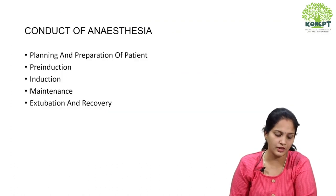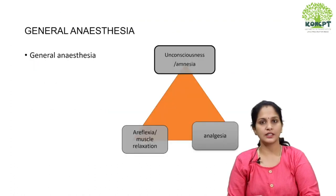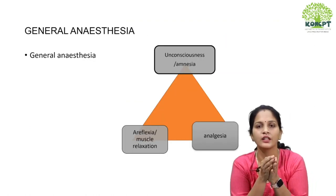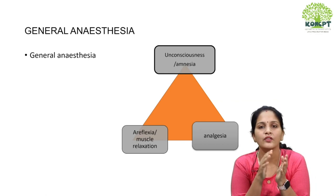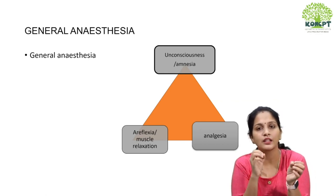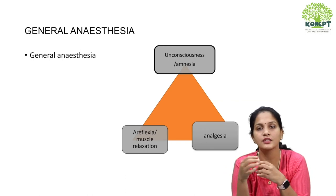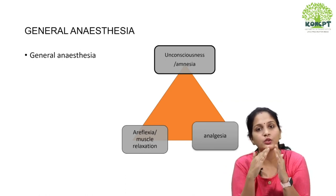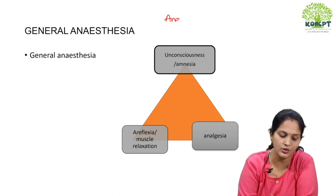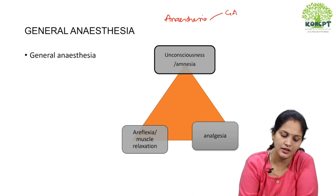So that was the history of anesthesia. Now let us see what anesthesia is. By giving certain drugs, we create a lack of sensation — we remove pain and other sensations from the patient. Anesthesia can be mainly divided into two types: one is general anesthesia and the other is regional anesthesia.